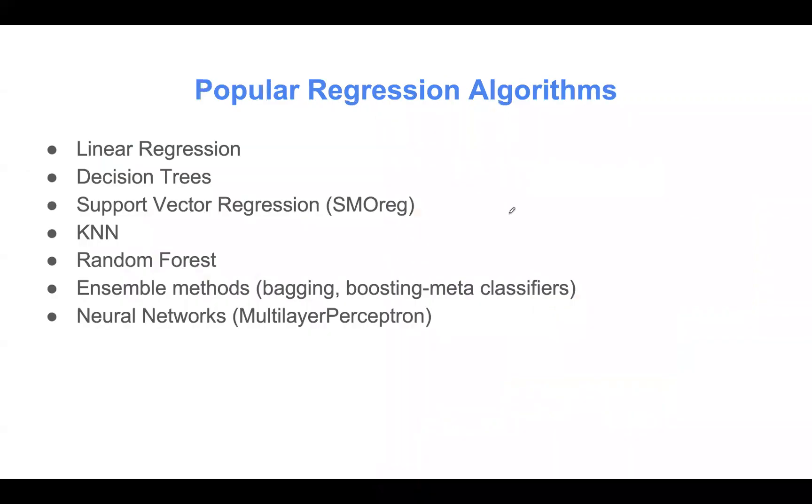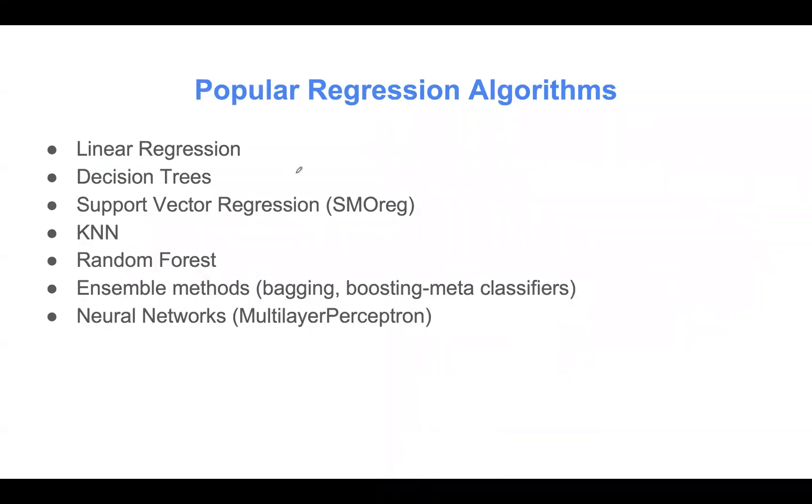Now that we know that, let's look at some of the popular regression algorithms. We have linear regression, decision trees, and in Weka, we use what we call the support vector regression, referenced as SMO reg. We also have K-NN, random forest, ensemble methods like bagging and boosting. In Weka, we can find it in the meta folder. Also, neural networks. Decision trees here can handle both classification and regression problems. Similarly here for neural networks. In Weka, we call it multilayer perceptron.